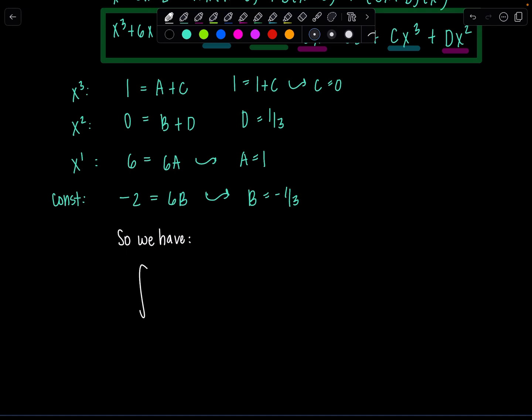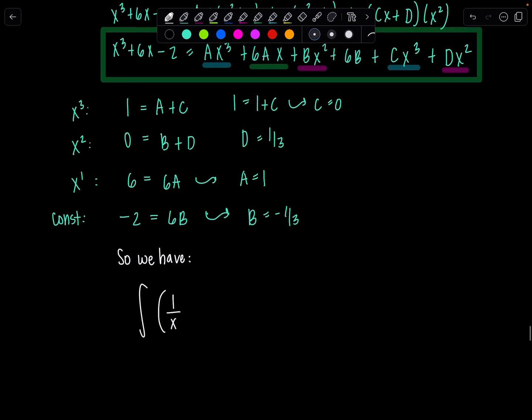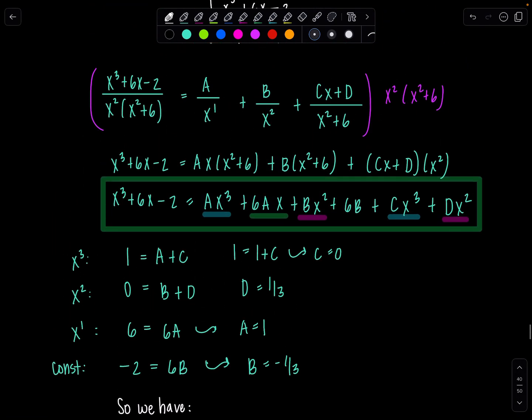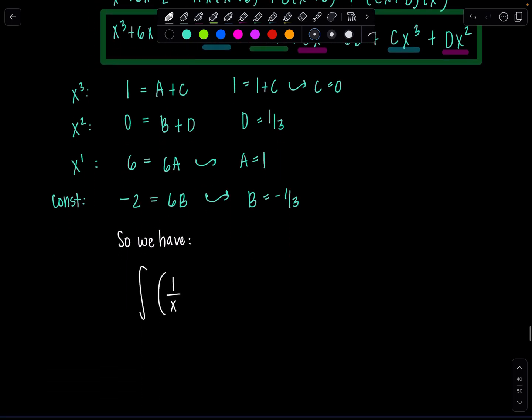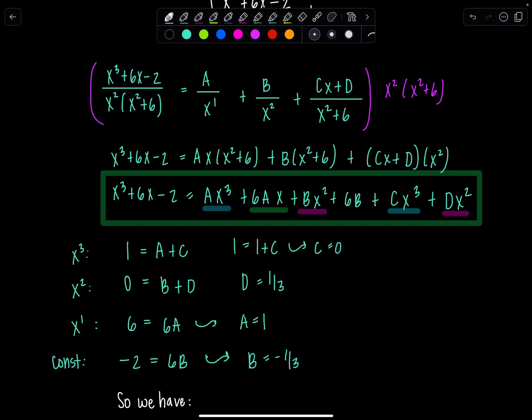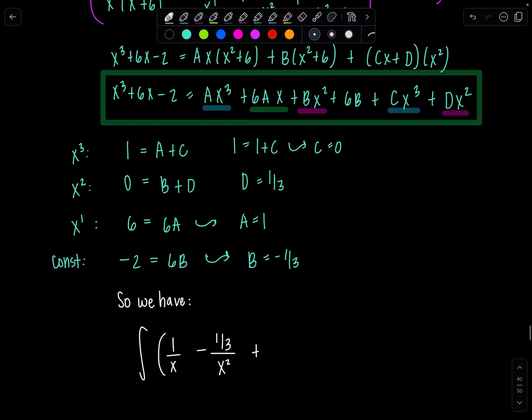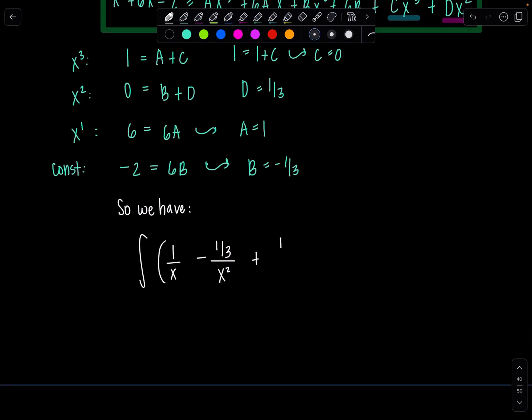So A was 1, so just 1 over x, and then B was negative one-third, so I'm going to write minus one-third over x squared plus, and then C was 0, so no x term in the numerator, just D, the constant. What was D? D was one-third. One-third over x squared plus 6 dx.